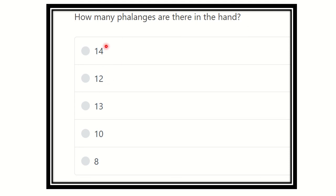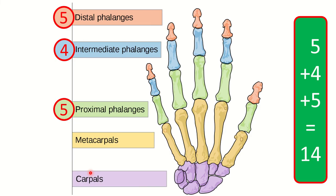So it is one of the direct questions - how many phalanges are present in the hand. The options are 14, 12, 13, 10, and 8. Let's see here. We can see a picture and here...